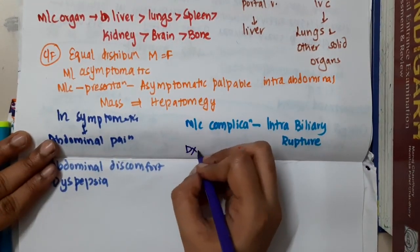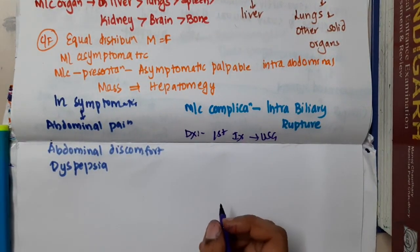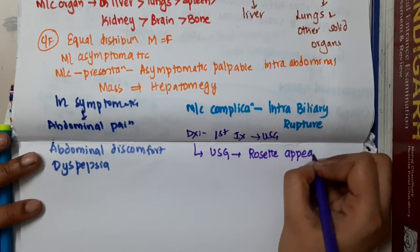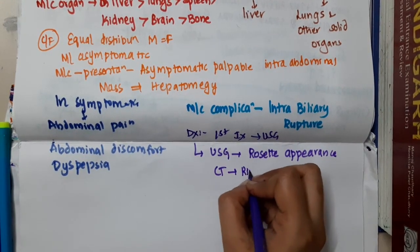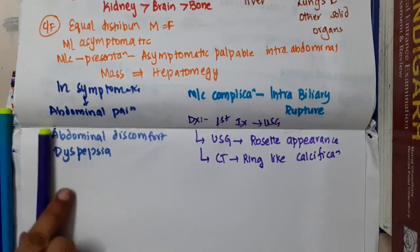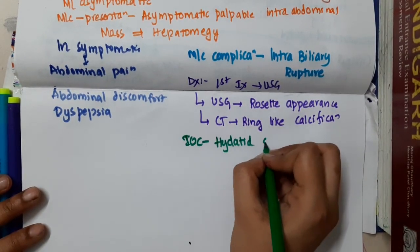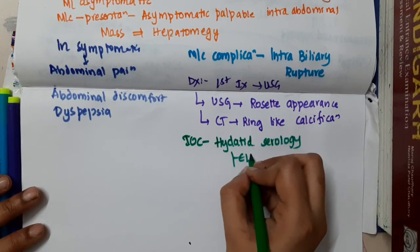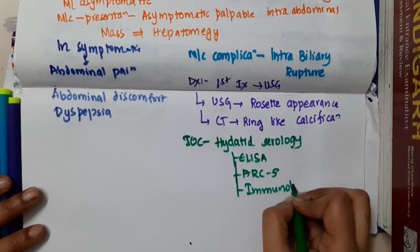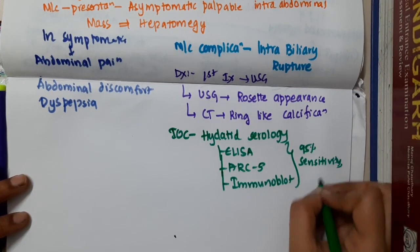For diagnosis, the first investigation done in hydatid cyst is ultrasonography. USG shows rosette appearance, and CT scan shows ring-like calcification and also rosette appearance. The investigation of choice is hydatid serology — either ELISA, ARC-5, or immunoblot — which have almost 95% sensitivity and specificity.